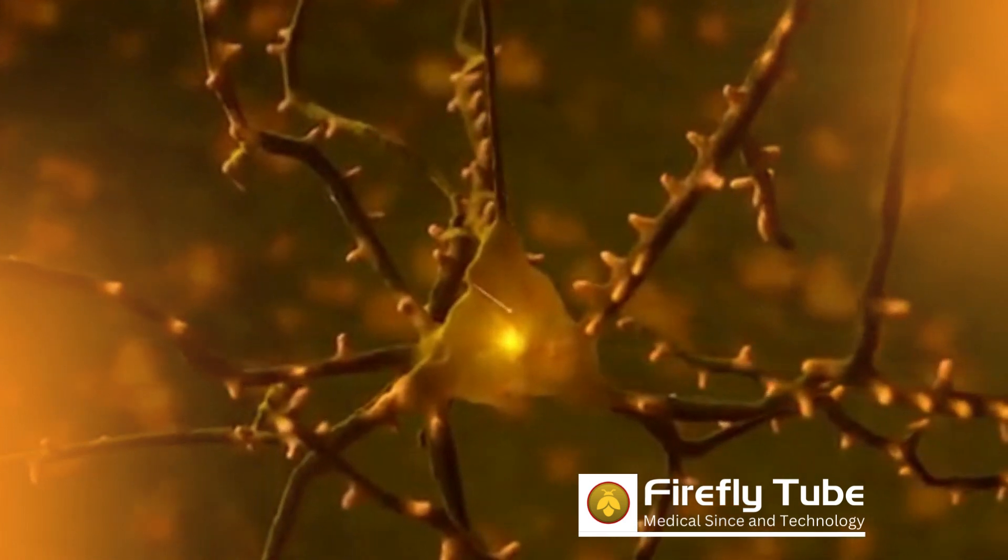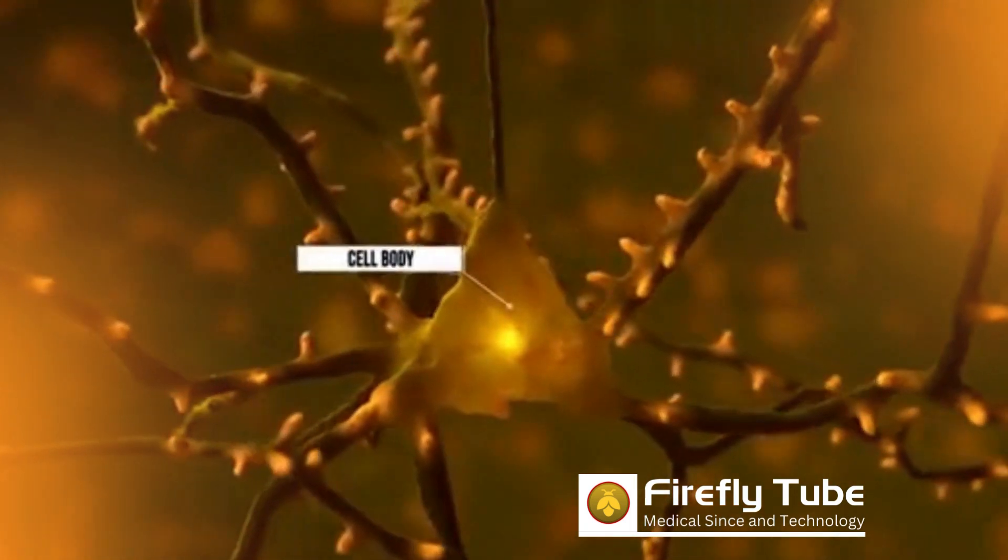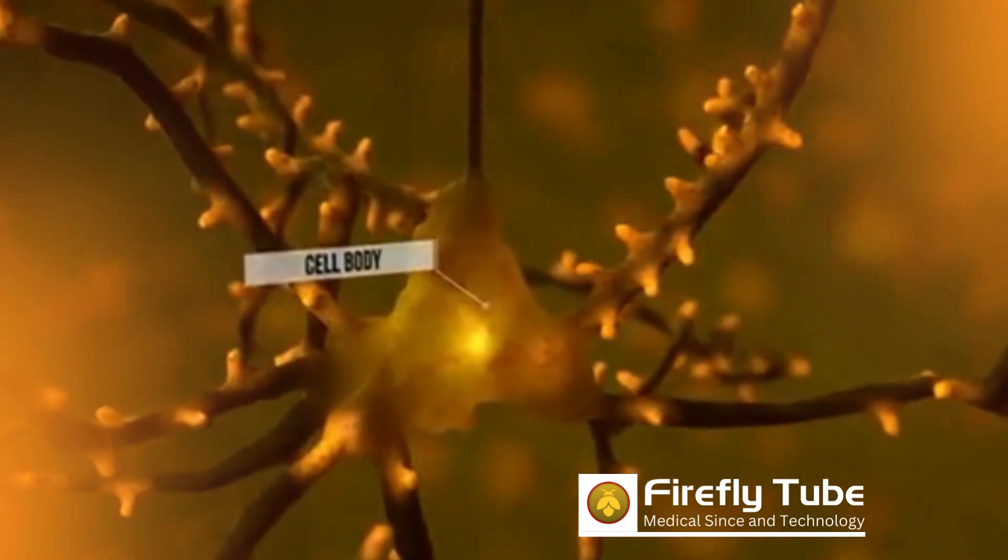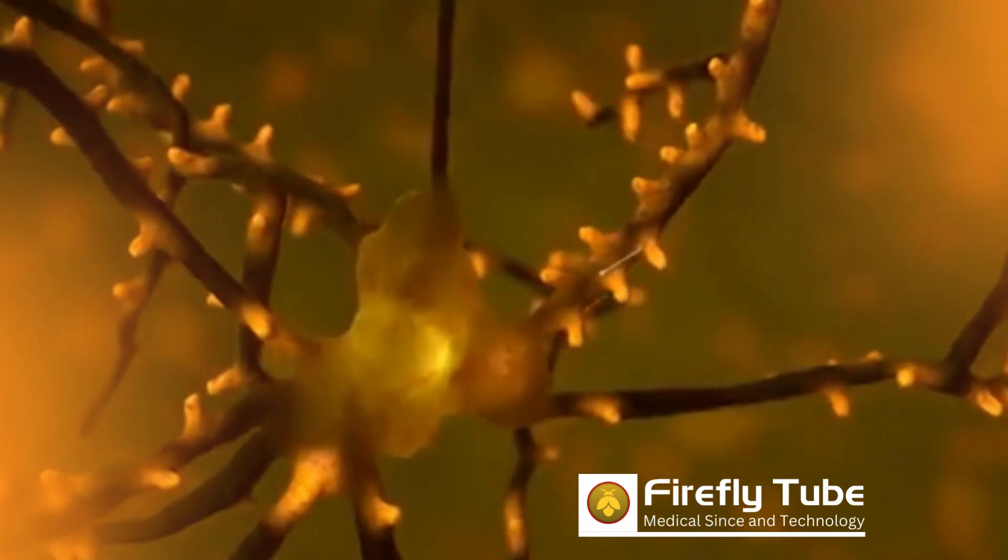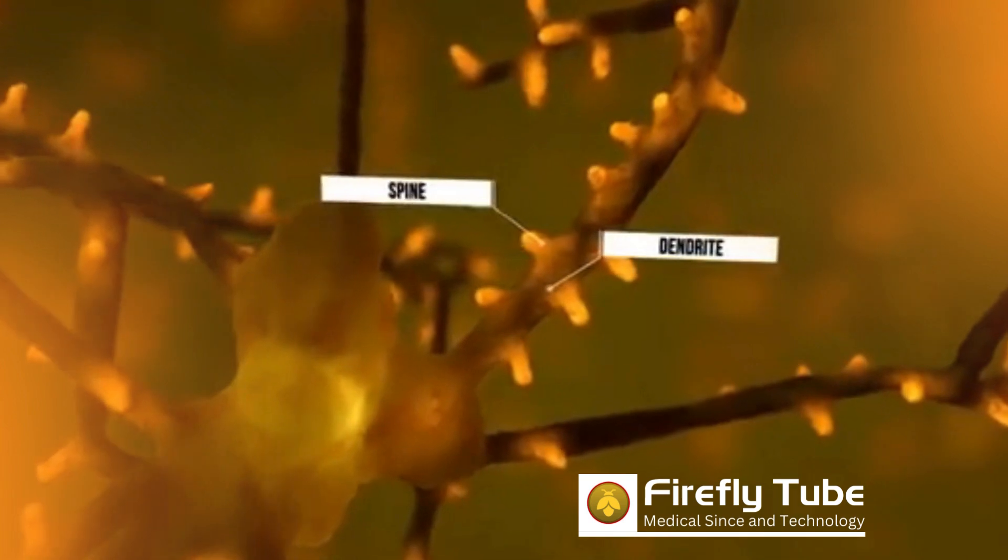In principle, all nerve cells have a similar structure. Nerve cells have a cell body in which there is a cell nucleus. Nerve cells often form dendrites, which possess spines.